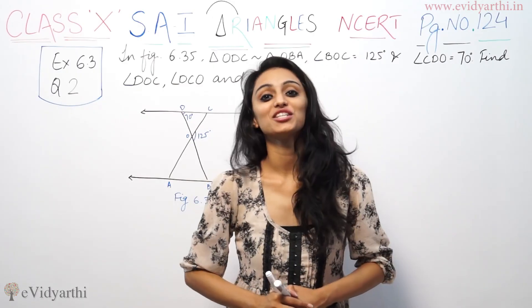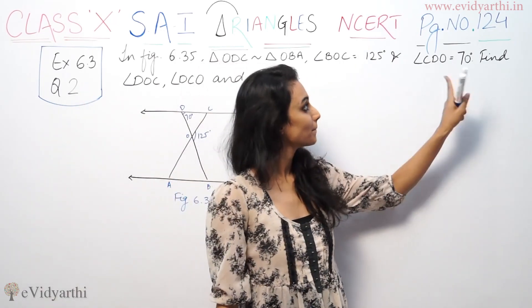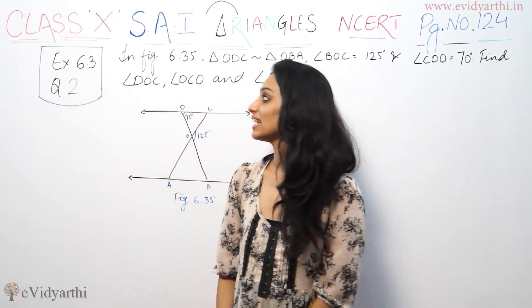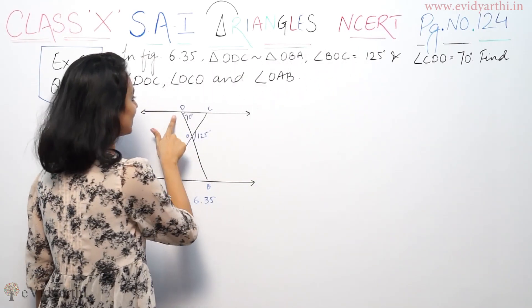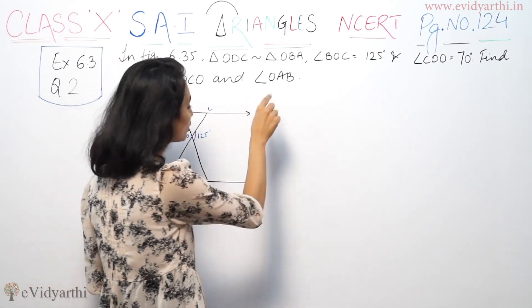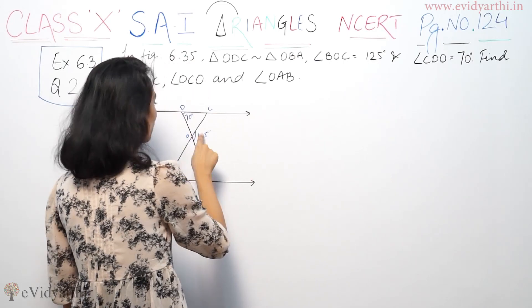Hi, I am Sushku with a new question of triangle. This is question number 2, exercise 6.3, page number 124 of NCERT. This says that triangle ODC and triangle OBA, ODC and ODA, they are similar.